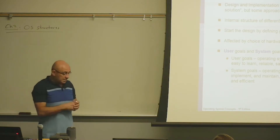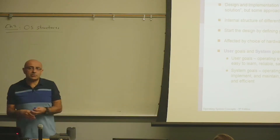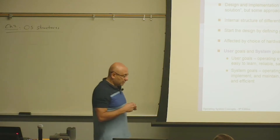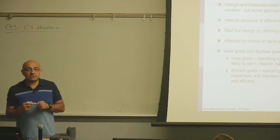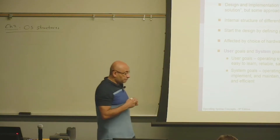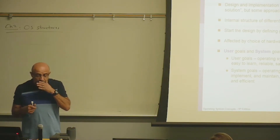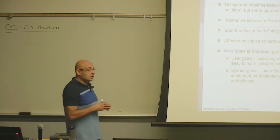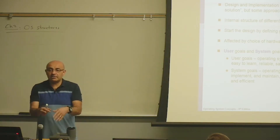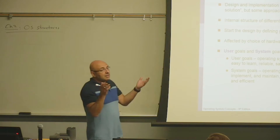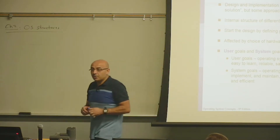There is no perfect solution to designing operating systems or to designing software systems in general. As we will see when we get to the different design methods or structures of operating systems, one operating system may use multiple approaches because operating systems evolve over time. In the earlier versions of an operating system, the designers may use a certain design approach or philosophy, and then they will realize they have to change it or combine it with other design approaches.